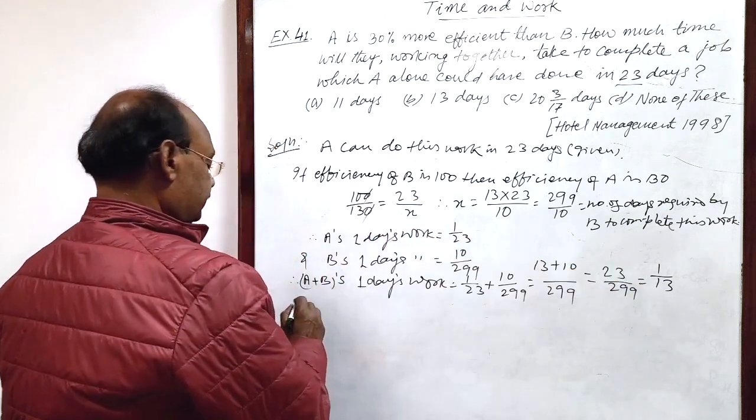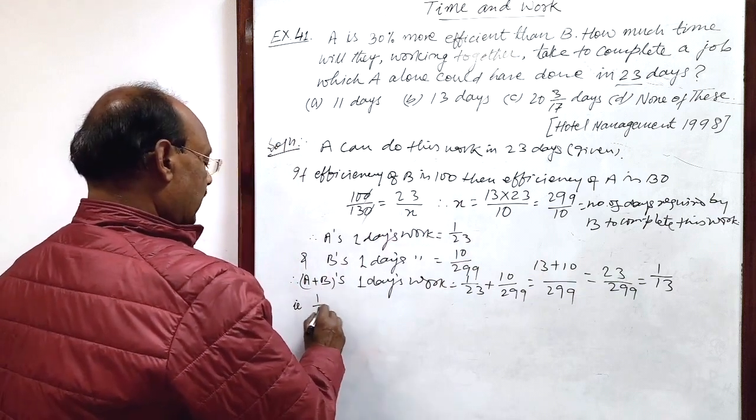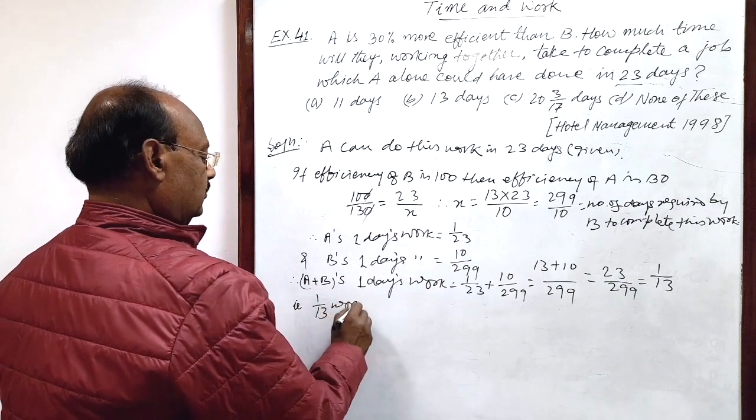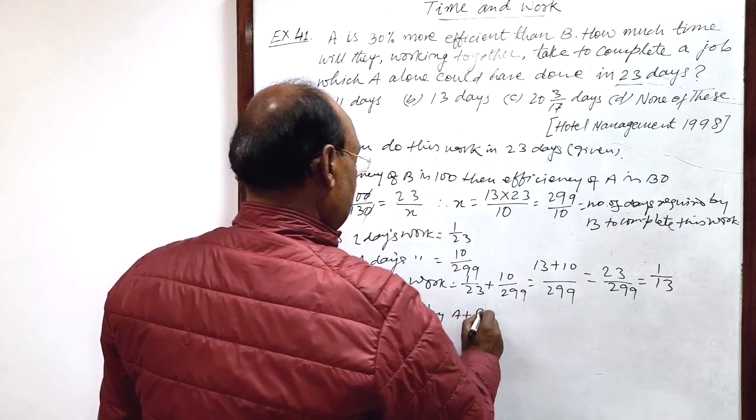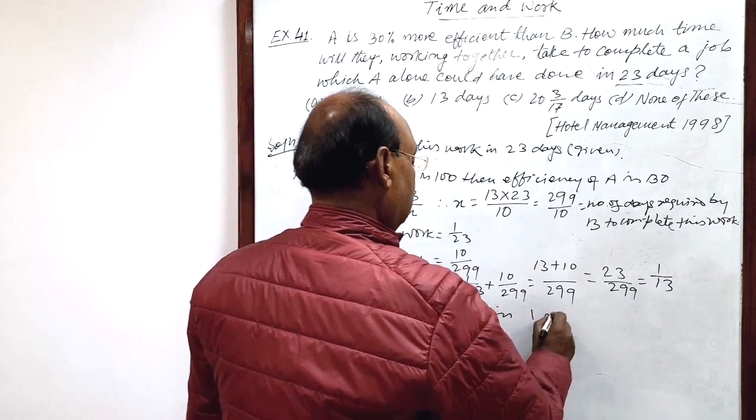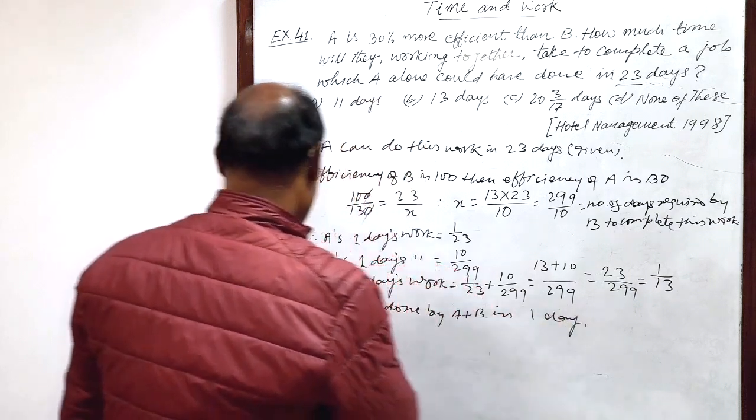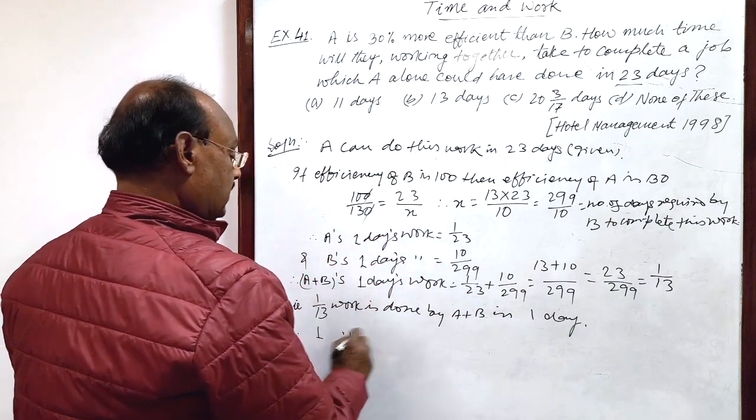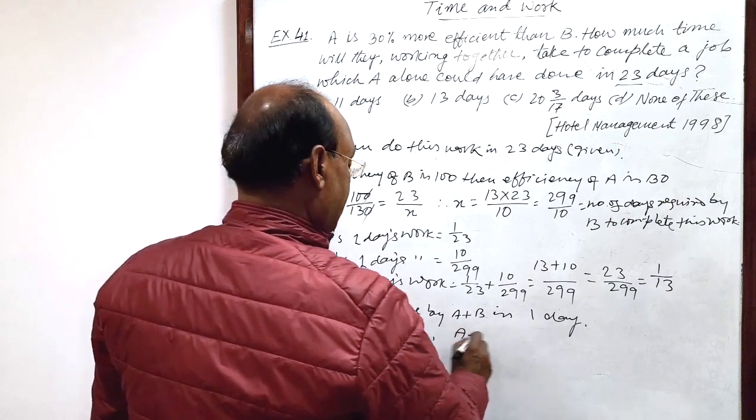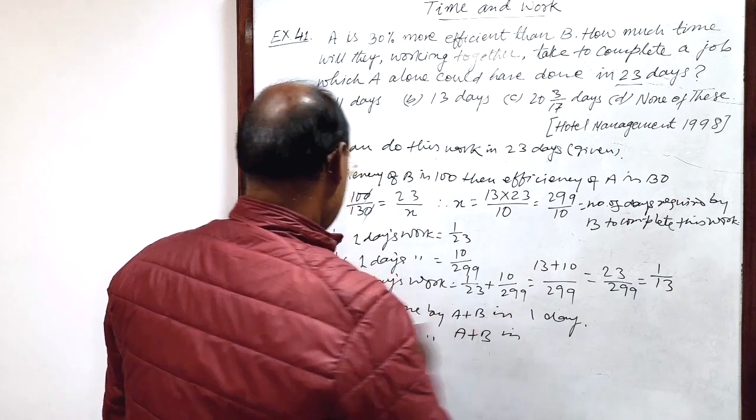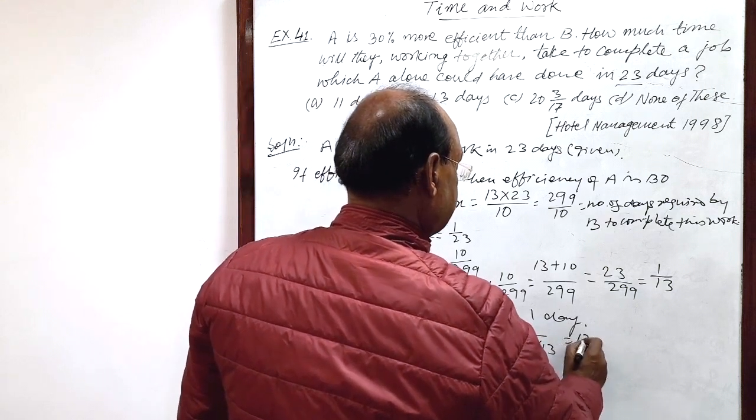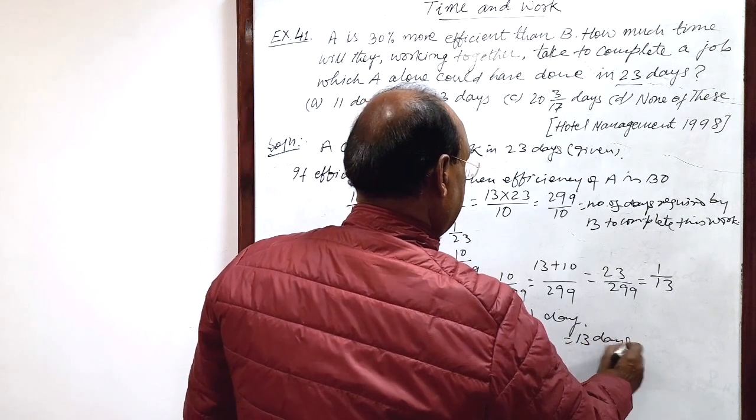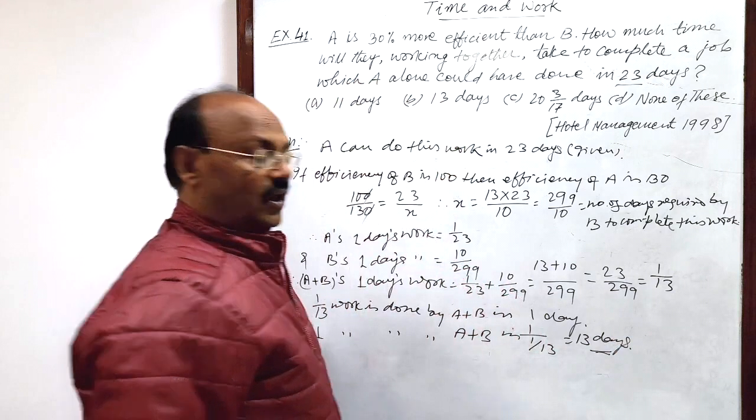That is, 1 by 13 work is done by A plus B in one day. Therefore 1 work is done by A plus B in, by unitary method, 1 upon 1 by 13, this is equal to 13 days. So this is the answer.